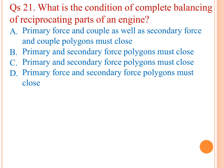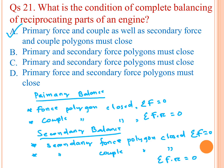What is the condition of complete balancing of reciprocating parts of an engine? A) Primary force and couple as well as secondary force and couple polygons must close. For complete primary balancing, the primary force polygon should be closed: summation of F equal to 0, and couple polygon must be closed: summation of F·r equal to 0. For secondary balancing, secondary force polygon as well as secondary couple should be closed. So A is the answer.